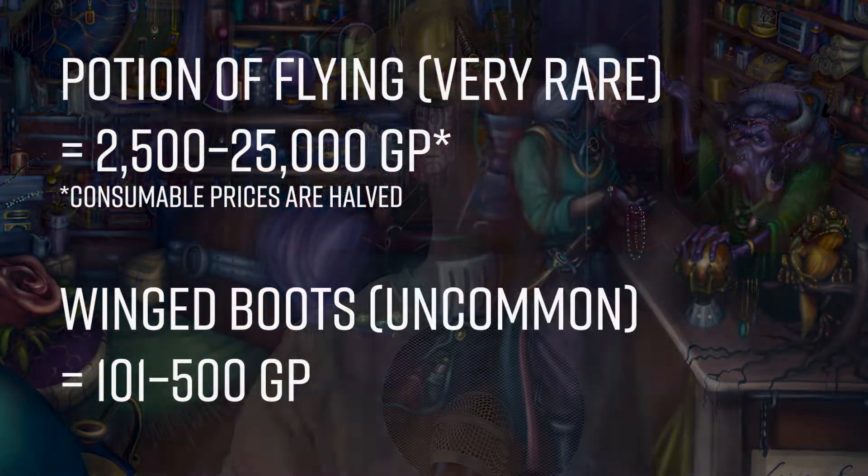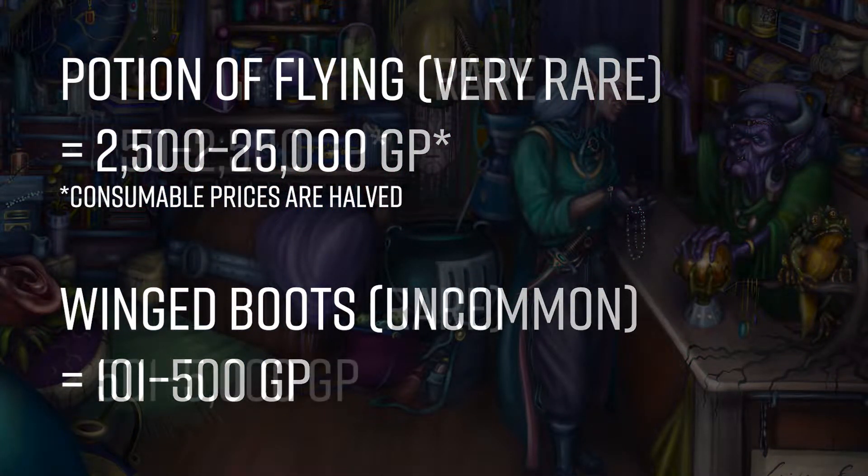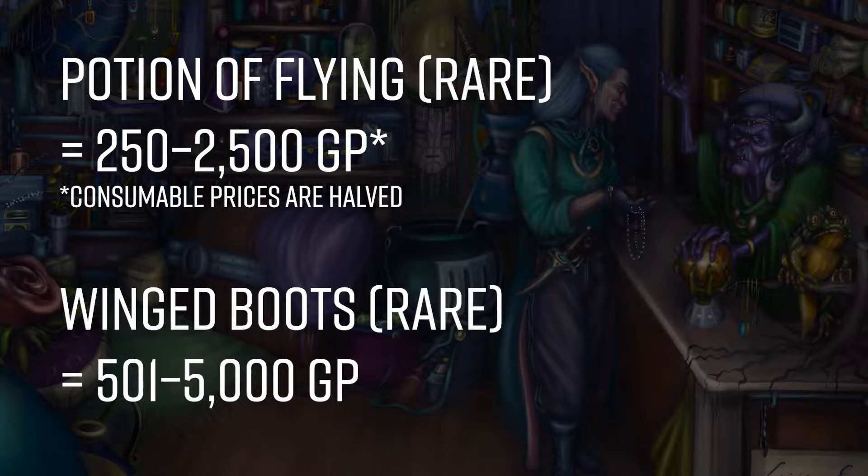There are two solutions to this. The first is that you accept that rarity is not only meant to indicate actual rarity, but also demand and power, and you go ahead and change some of the rarities as they pop up if you feel they're placed wrongly. So you could make both the potion of flying and the winged boots a rare item — remember, potions are half the price of a permanent magic item, so that would still make them less valuable than the boots. Change the rarities where they don't make sense, to preserve the idea that rarity reflects both scarcity and demand.